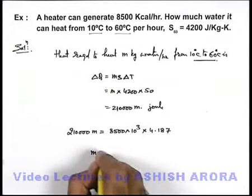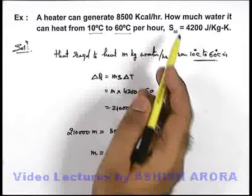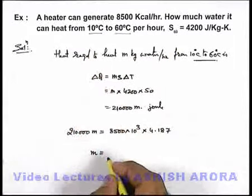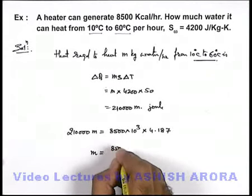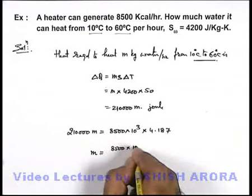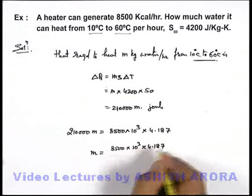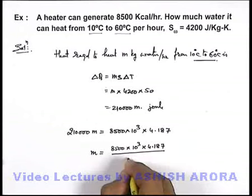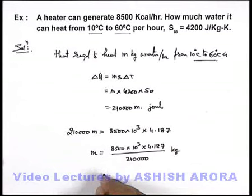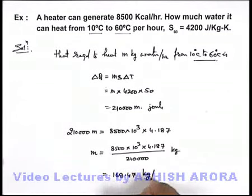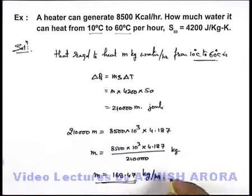On solving, the mass of water which the heater is heating from 10 degrees centigrade to 60 degrees centigrade per hour will be 8500 multiplied by 10 to the power 3 into 4.187, divided by 210,000 kilograms. On solving we get 169.47 kilograms per hour — this much amount of water is heated by this heater from 10 to 60 degrees centigrade. That is the answer to this problem.